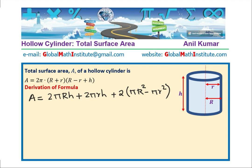Now we can clearly take 2πh common from the first two terms. We are left with capital R plus small r. In the second term, we can factor out π, and we are left with R² minus r².